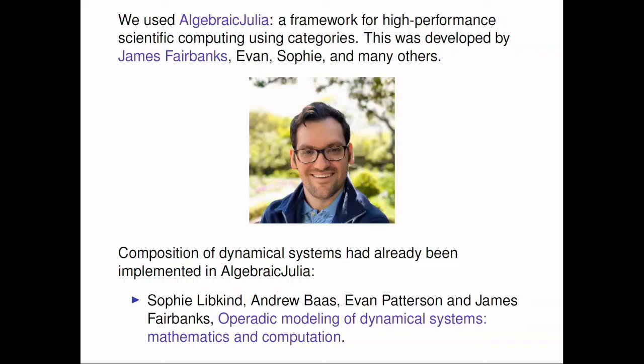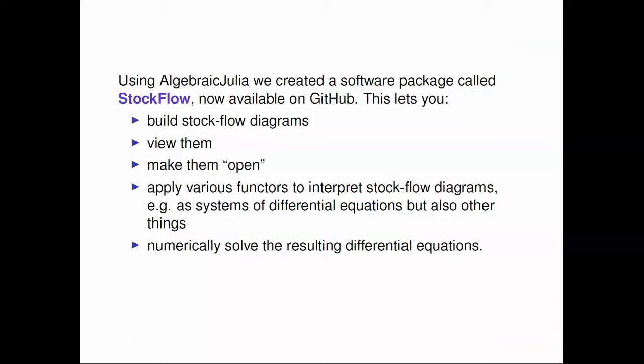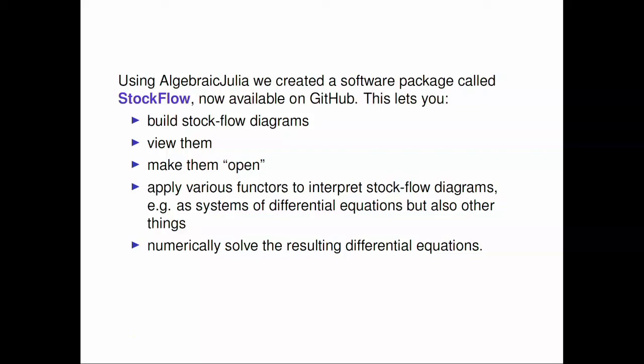It's not like you have the category theory ideas in your head and then type it all in C, just knowing that your code was inspired by category theory. You actually type the ideas into Algebraic Julia in the language of category theory. They had already done composition of dynamical systems in this framework by the time we came along. So we created a software package called StockFlow, which you can get on GitHub. It lets you build stock flow diagrams, view them, make them open by getting maps from sets A and B into them, apply various functors to them, and solve the resulting differential equations using the power of Julia.